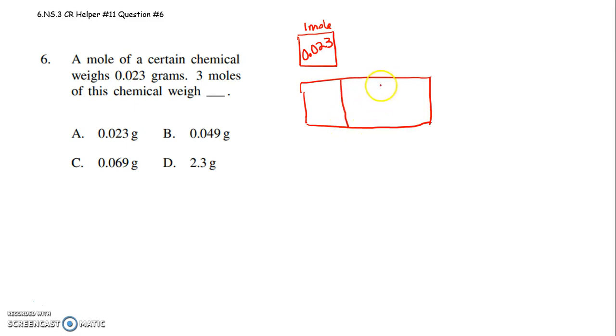What if we had one, two, three moles? Each one of these boxes would represent one mole. And each one of those moles would be 0.023.